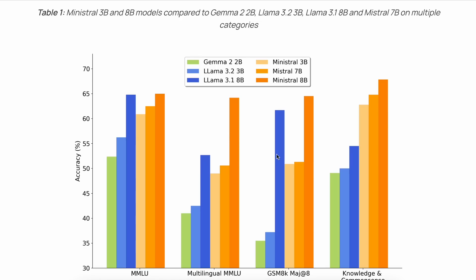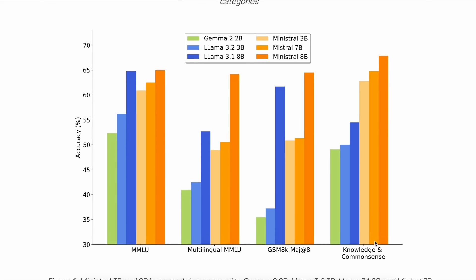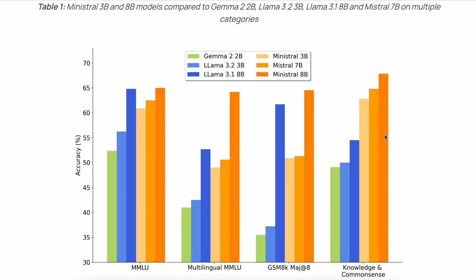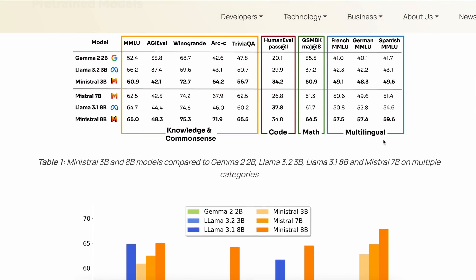In GSM8K, it also performs similarly to other models. Now, if you remember my previous video on Mistral, you'll know that they can't be trusted with benchmarks for specific reasons. The same goes here, because they've added a benchmark called 'Knowledge and Common Sense,' which isn't even a real benchmark — it's like they made it up. Why does Mistral do this every time? Don't trust these benchmarks; they're just for manipulation.